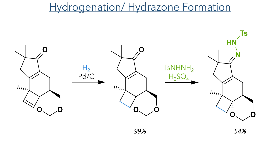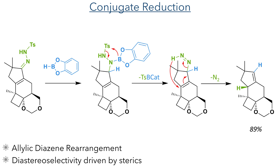This was then reacted with tosylhydrazine to form a hydrazone in a 54% yield. This hydrazone is necessary for the conjugate reduction, which involves an allylic diazene rearrangement promoted by catechol borane. This undergoes hydroboration with the hydrazone group to form an intermediate with the boron bonded to the nitrogen atom, which is eliminated along with the tosyl group to form a diazene intermediate that undergoes an allylic rearrangement with the alkene present on the molecule. This reaction produced the product in an 89% yield as a single diastereomer, with stereoselectivity driven by sterics which only allow catechol borane to approach from one face of the molecule.